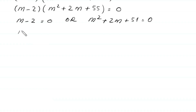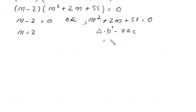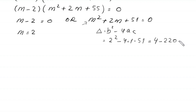From m − 2 = 0 we get m = 2. For the quadratic m² + 2m + 51 = 0, the discriminant is b² − 4ac = 4 − 4(1)(51) = 4 − 204 = −200, which is less than 0. So no real solutions come from the quadratic. We accept only m = 2.